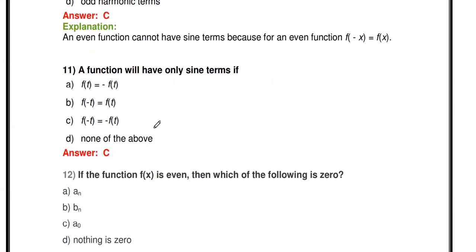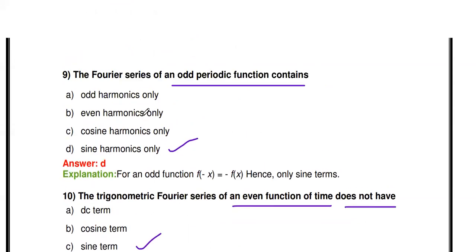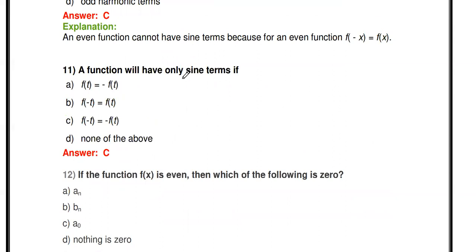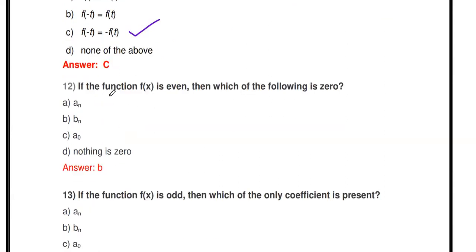Next question: A function will have only sine terms if it is which type? Reversing the earlier question — a function has only sine terms when it is an odd function. The odd function condition is: f(t) = -f(-t), or equivalently x(t) = -x(-t). So if a signal is an odd signal, the Fourier Series consists of only sine terms.